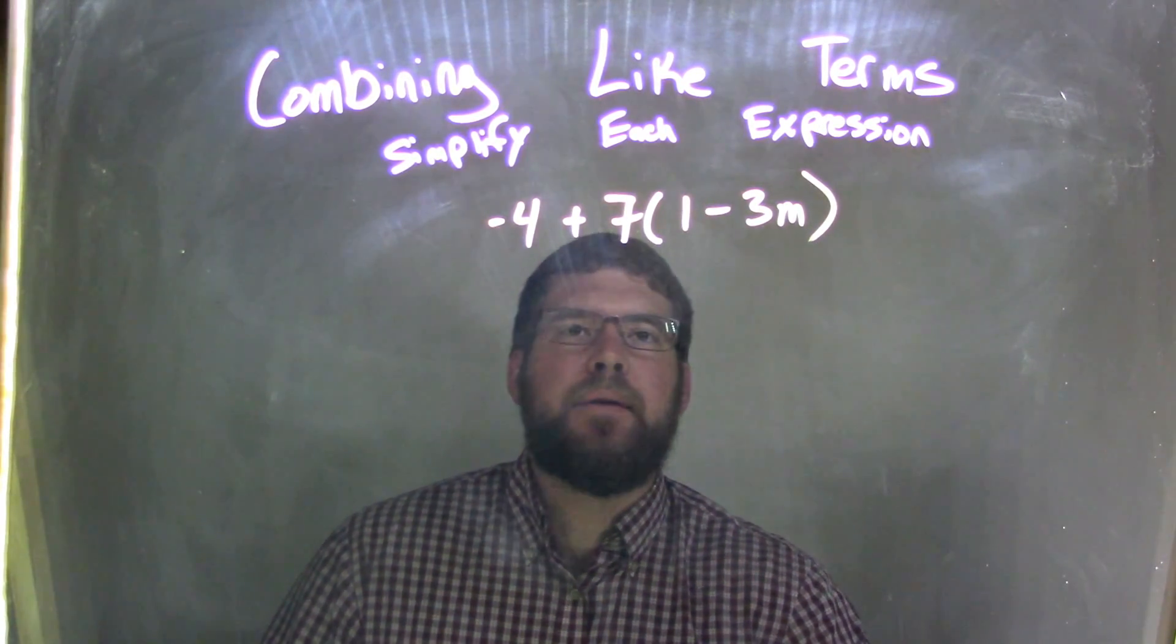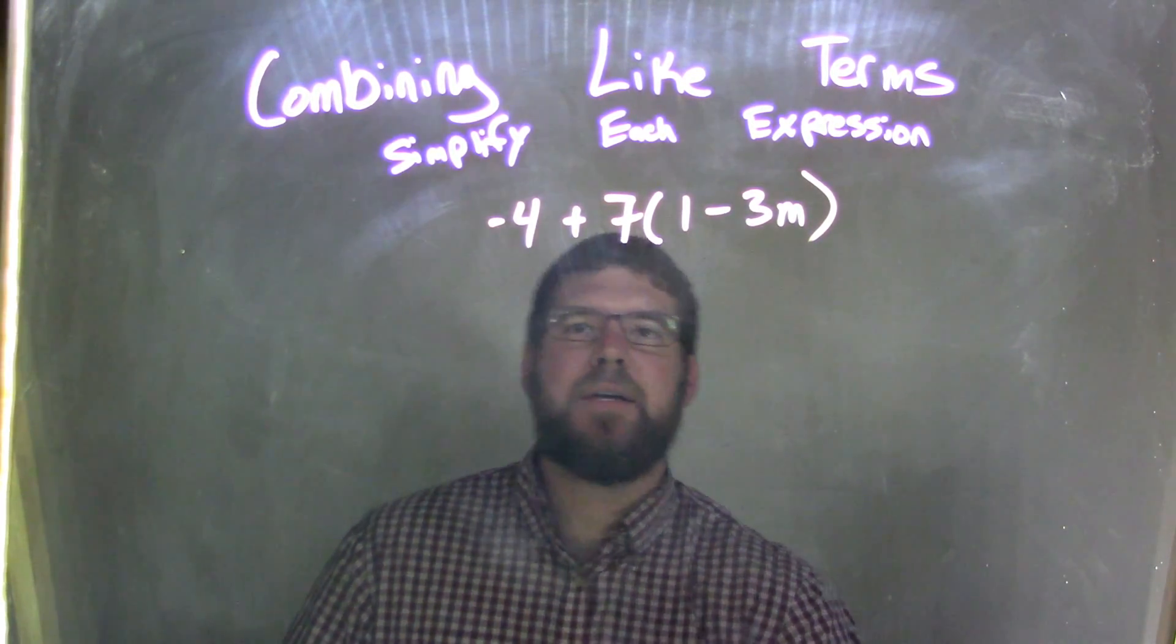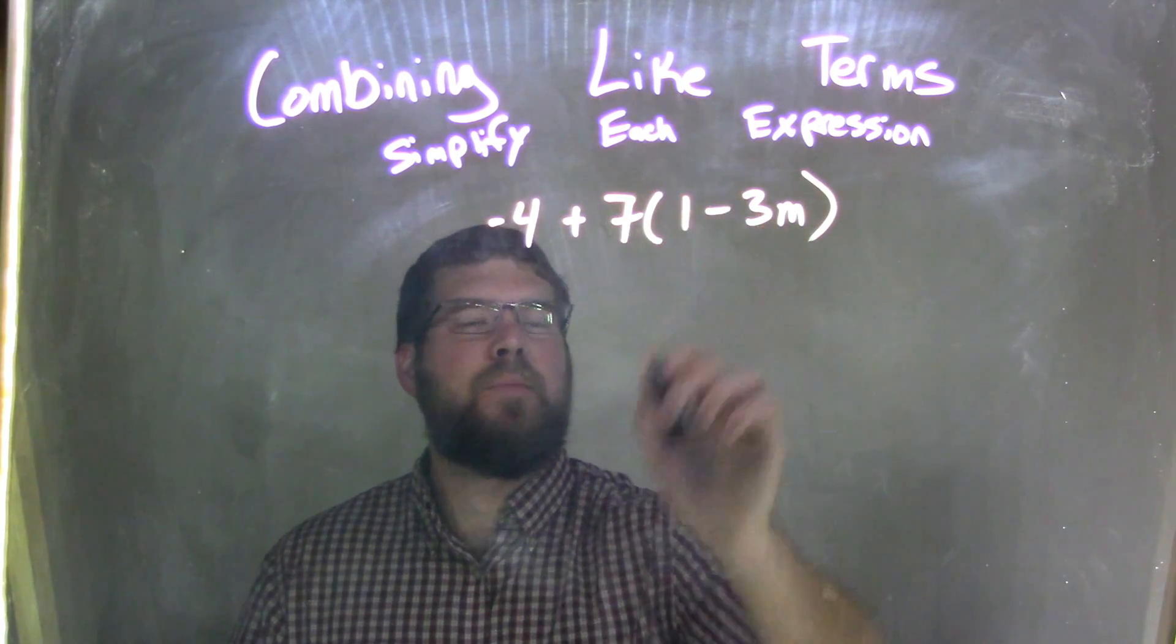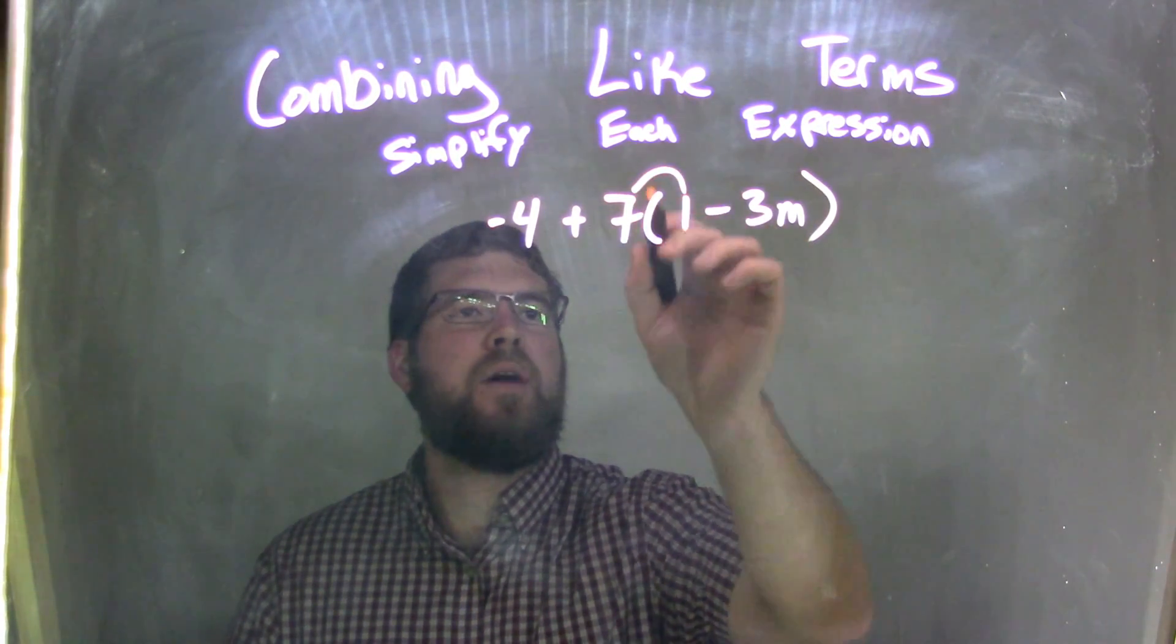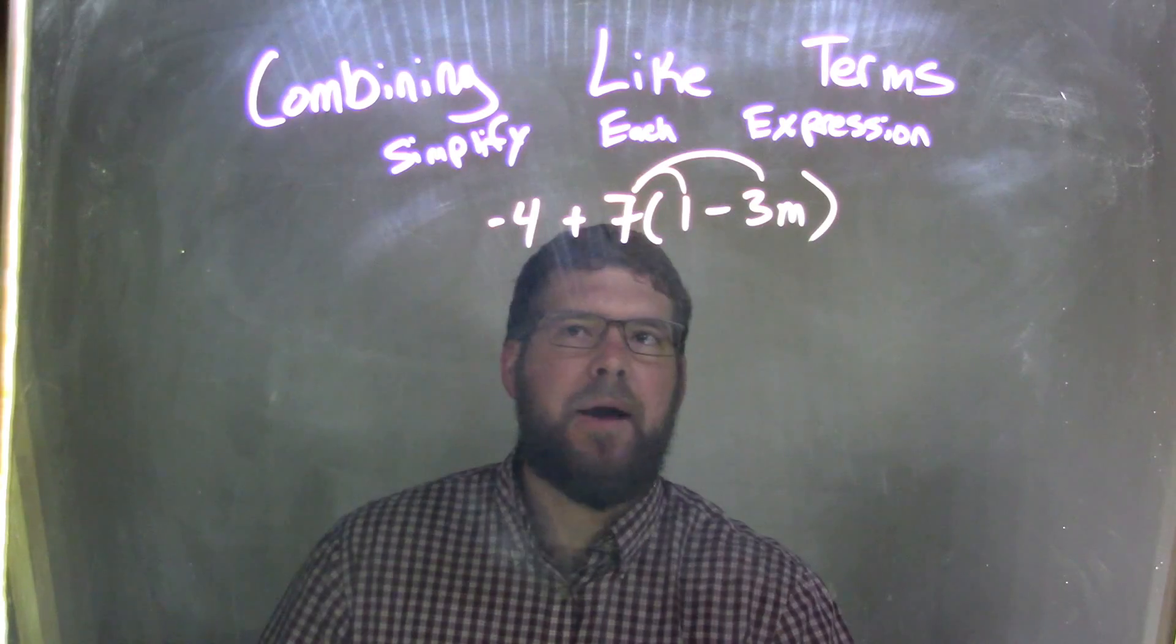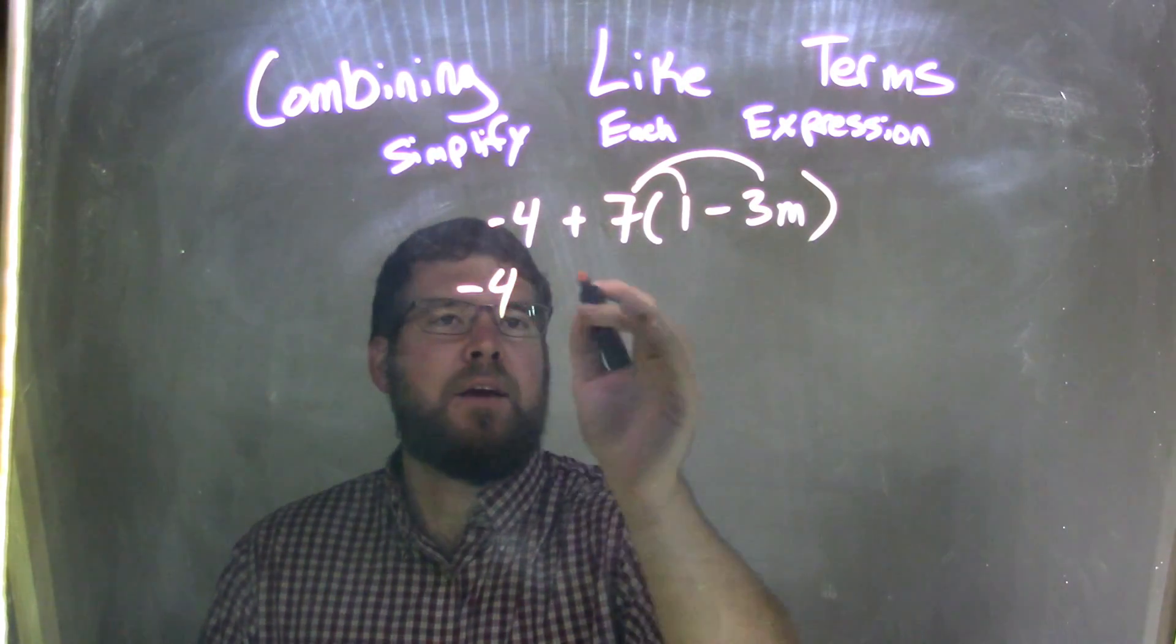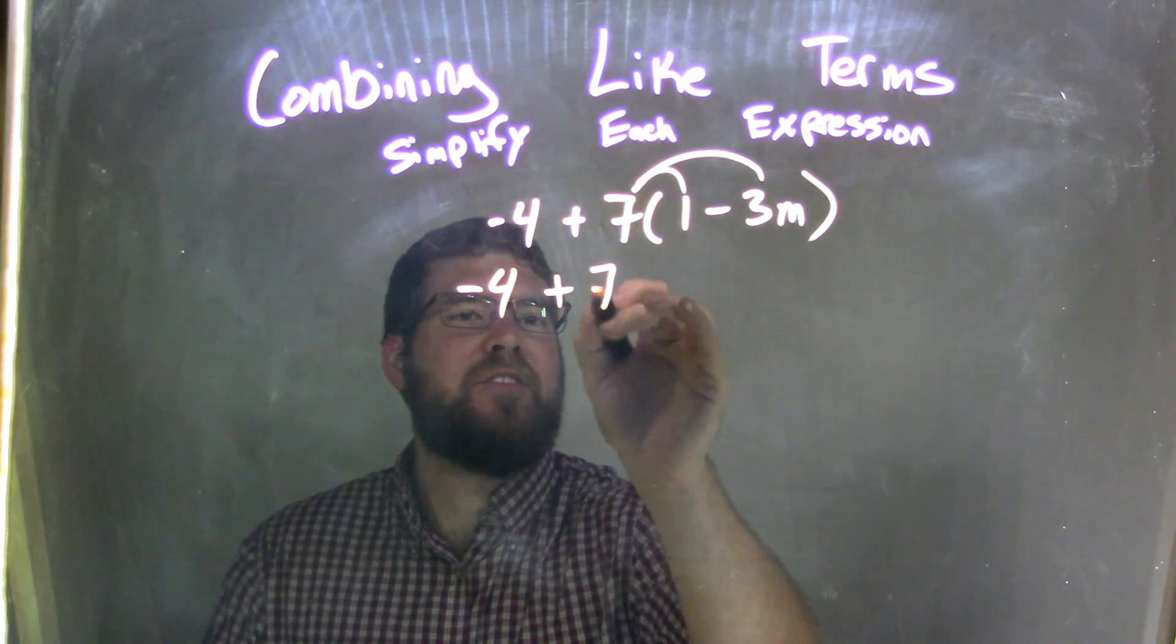Well, my first step I want to do here is I want to distribute that 7 to both parts here. That's 7 times the 1 and 7 times the 3m. So I'm going to leave the negative 4 out here. Plus 7 times 1 is just 7.